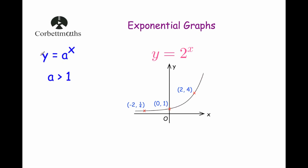Let's start off with the graph y equals a to the power of x, where a is a number bigger than 1. So that would be a graph such as y equals 2 to the power of x. If I was asked to sketch this graph, the first thing I would do is label the crossing of the y-axis at the point 1, because 2 to the power of 0 is 1.